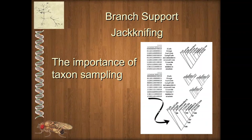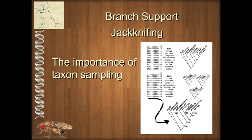The next branch support method, number two, is called jackknifing. Jackknifing is really a test for how precise our phylogeny is — how sensitive it is to taxon sampling. What we do is remove one of the species, redo the analysis, and if the analysis is not sensitive to that taxon, you'll have the exact same set of relationships just without that branch. But if when you remove a species things move around, then those relationships are no longer as well supported.